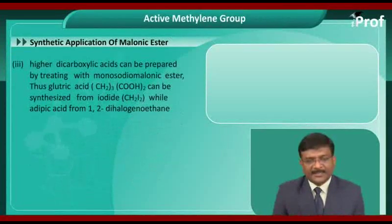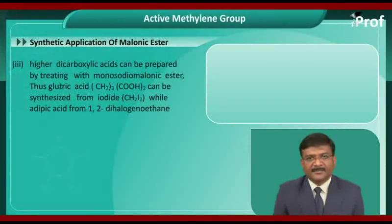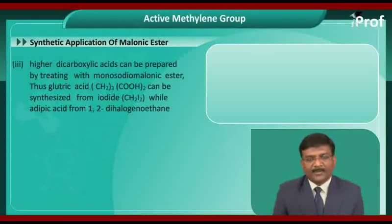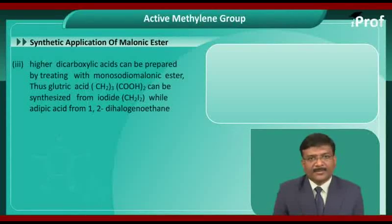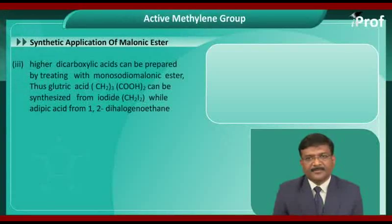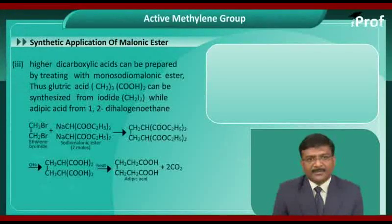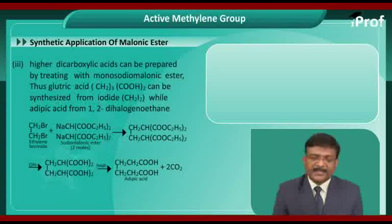Higher dicarboxylic acids can be prepared by treating alpha-omega dihalides in place of iodine with monosodio-malonic ester. Thus, glutaric acid can be synthesized from 1,3-diiodopropane, while adipic acid from 1,2-dihalogenoethane, that is ethylene bromide.